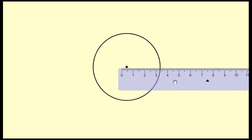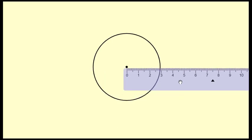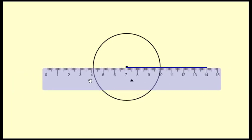Now we have to extend the diameter such that points P and Q are at a distance of 7 centimeters from the center. I'll extend the line up to 7 centimeters on one side and then also extend it up to 7 centimeters on the other side from the center. So here I've extended the lines to 7 centimeters.